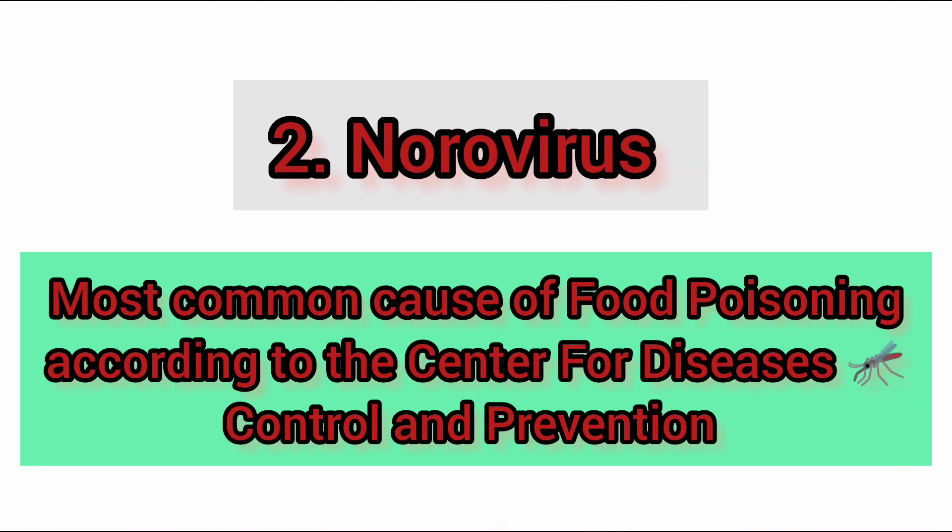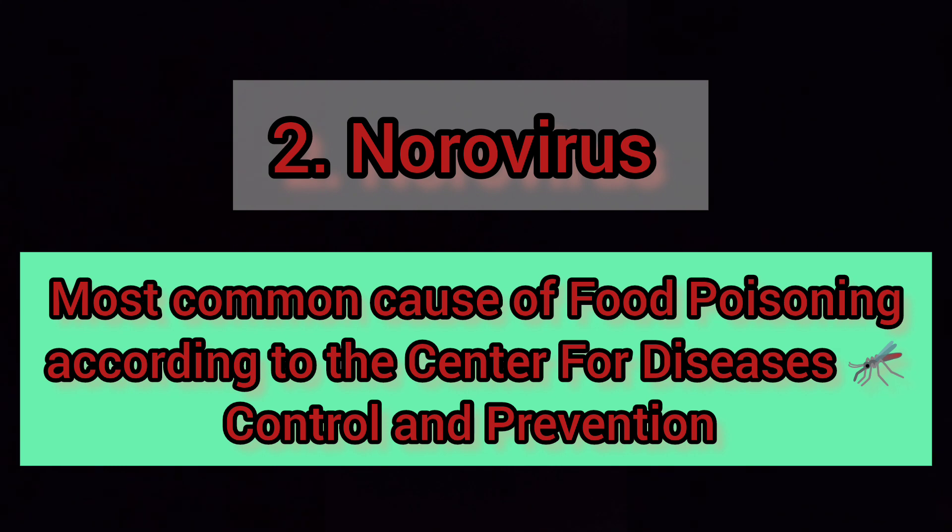In children, the most common cause of vomiting from food poisoning is norovirus, which is listed as the most common cause of food poisoning according to the Centers for Disease Control and Prevention.